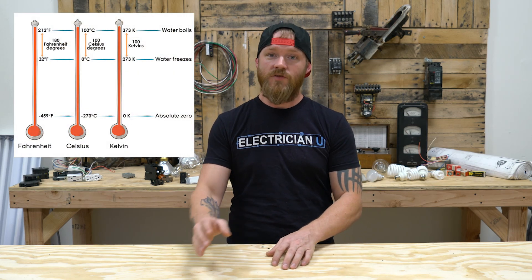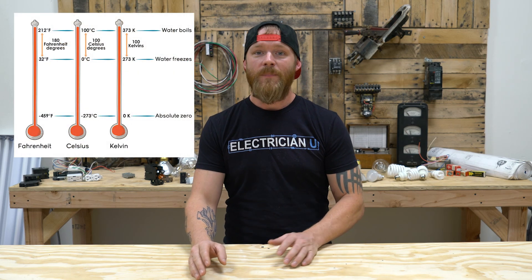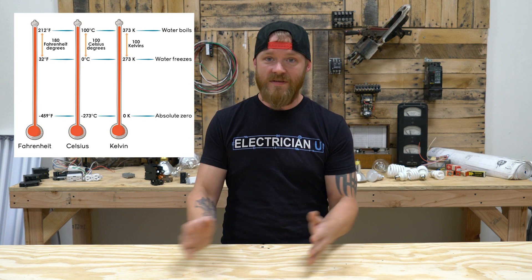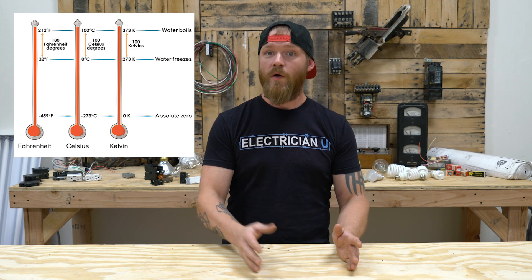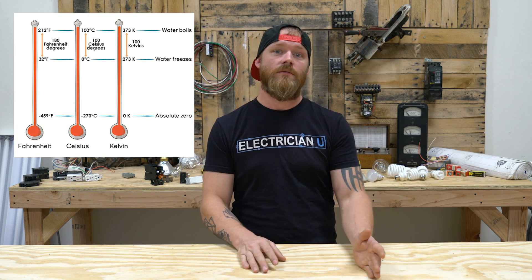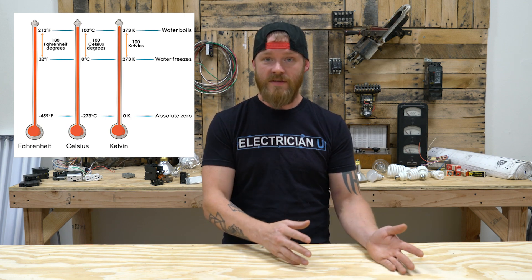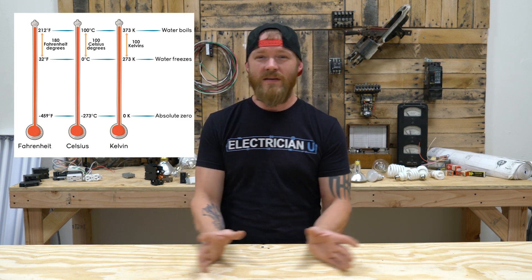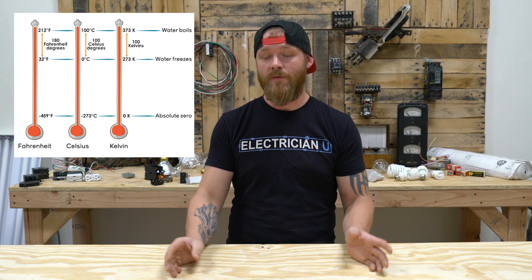Kelvin is basically a unit of measure for absolute temperature. There are different temperature scales that we have — Celsius, Fahrenheit, and Kelvin. A lot of them are based off of the boiling point and the freezing point for water. With the Fahrenheit scale, water boils at 212 degrees and freezes at 32 degrees. With Celsius, water boils at 100 degrees and freezes at 0 degrees. So it's just different ways of looking at the same event.